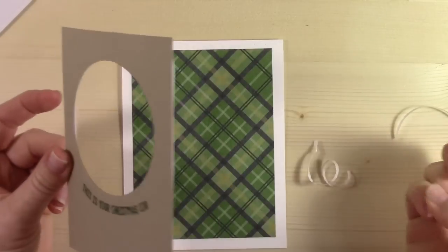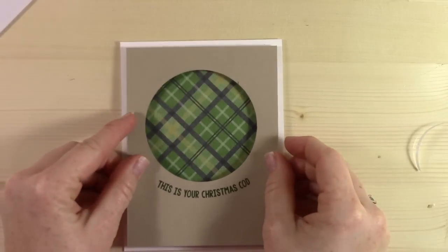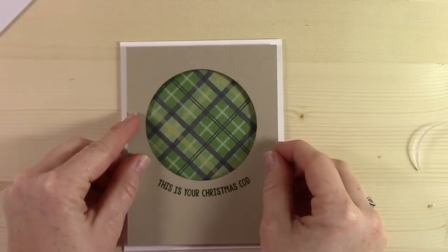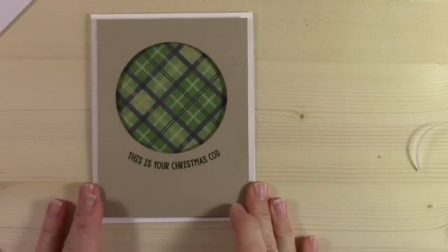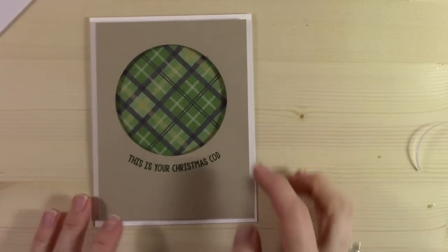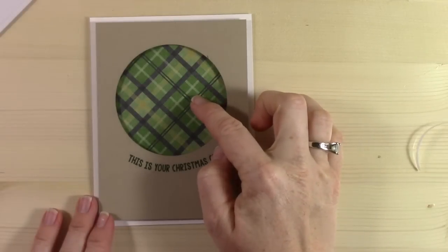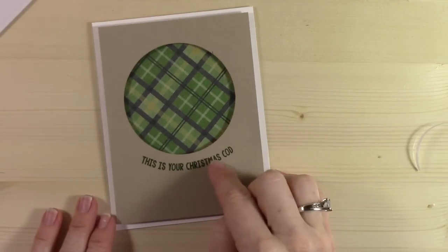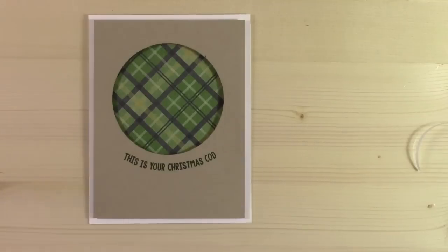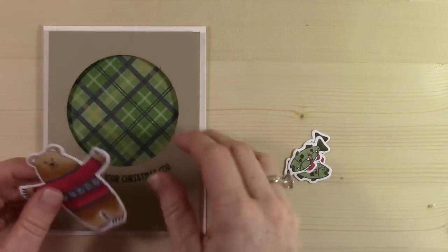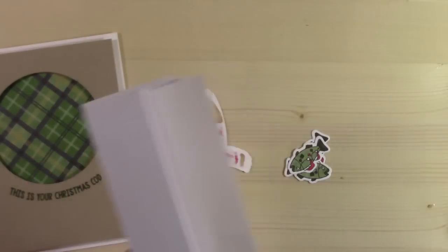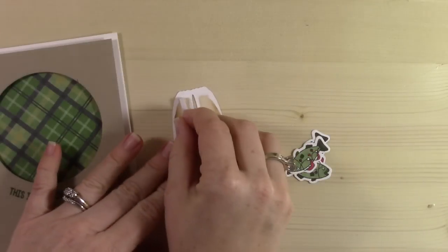I just tore my paper. Let's go ahead and continue to remove the back, and then I'm just gonna pop this up right over the top. Now you're gonna notice that the plaid paper does not stick out around the edges. It's only just there in the circle.